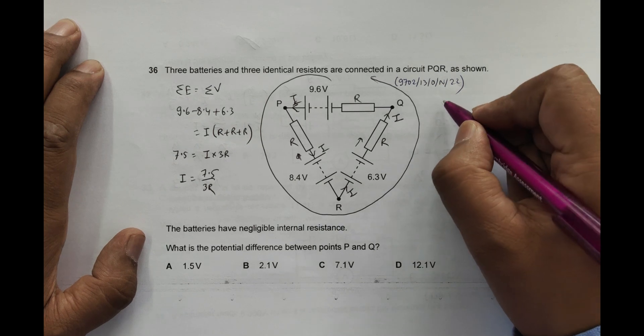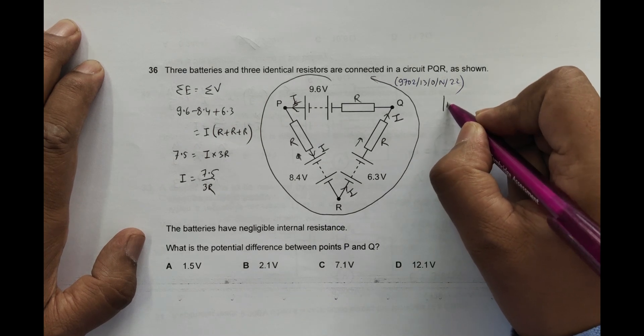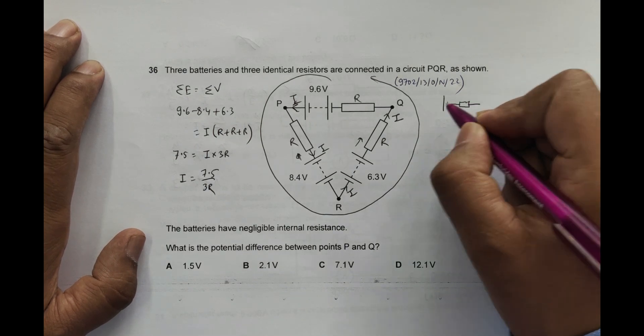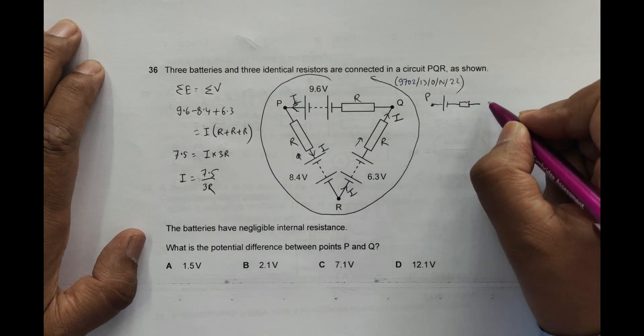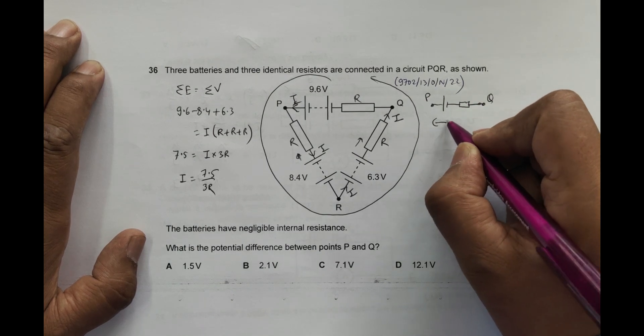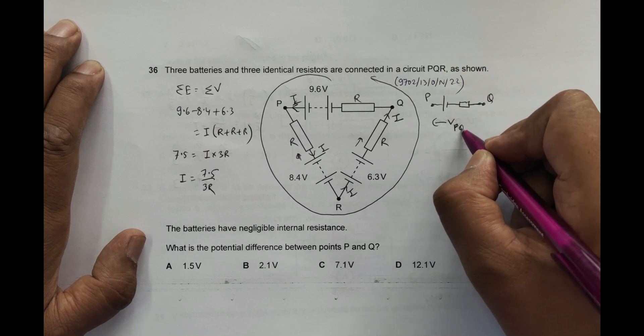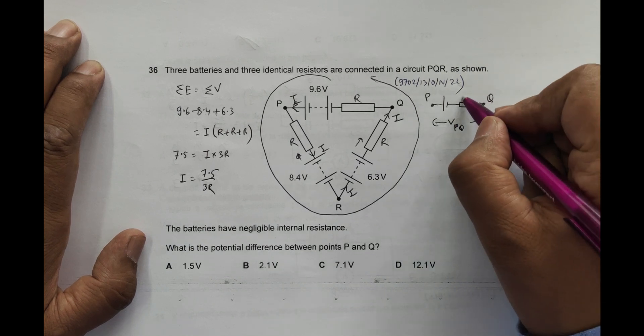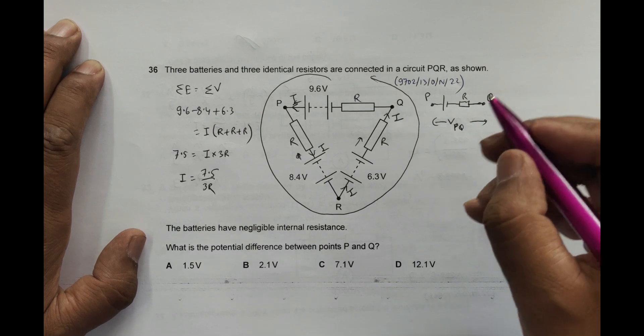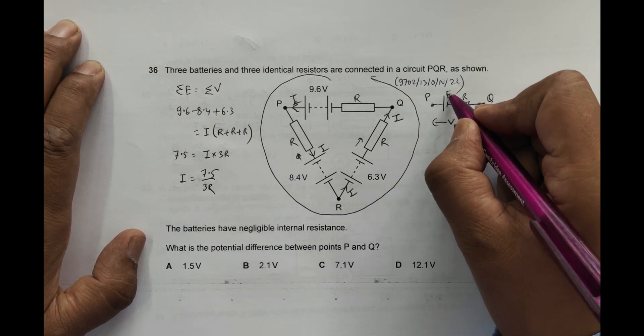Now we need the potential difference across the terminals P and Q. So this is the source, this is R, this is P, this is Q. We need to find the PD across this, VPQ. The EMF here is 9.6 volts.